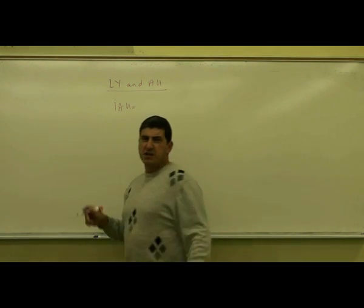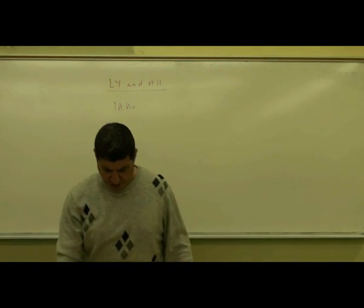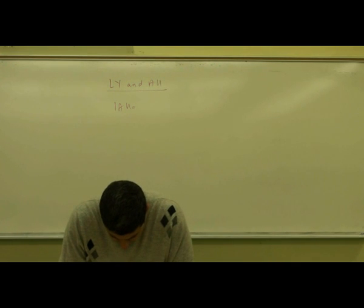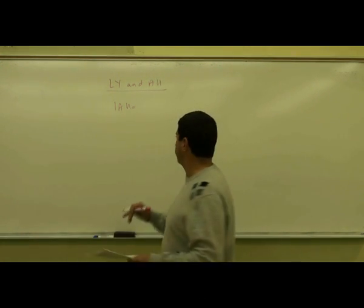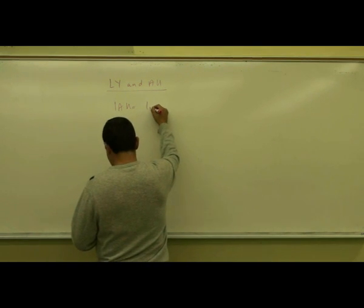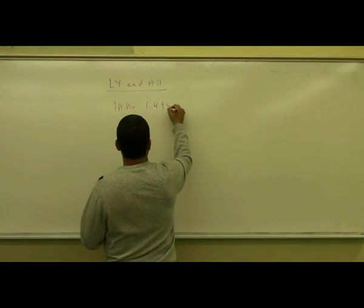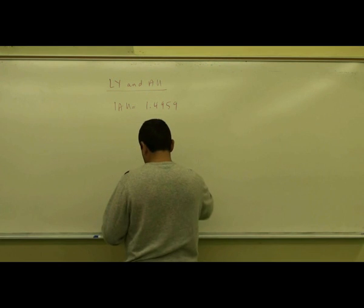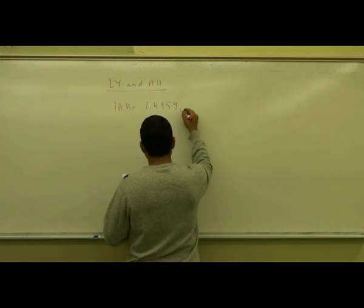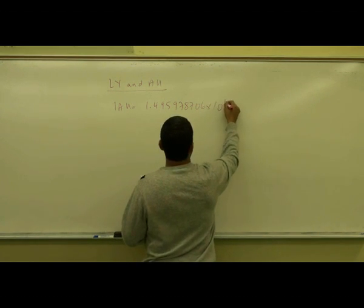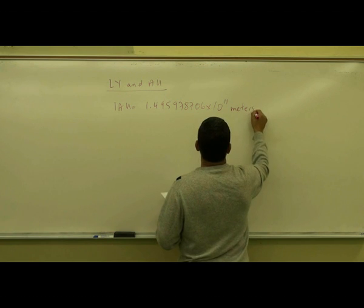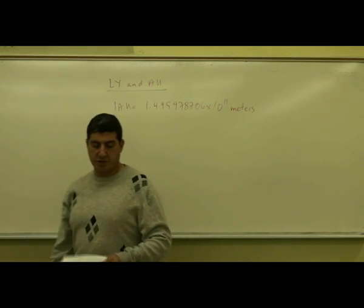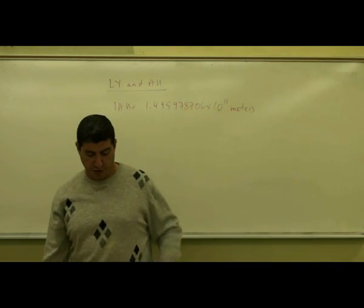And it is the distance, the average distance between the earth and the sun. And it corresponds to, I'm going to give the exact value here, 1.495978706 times 10 to the 11 meters. So that's the average distance between the earth and the sun. That's the astronomical unit.